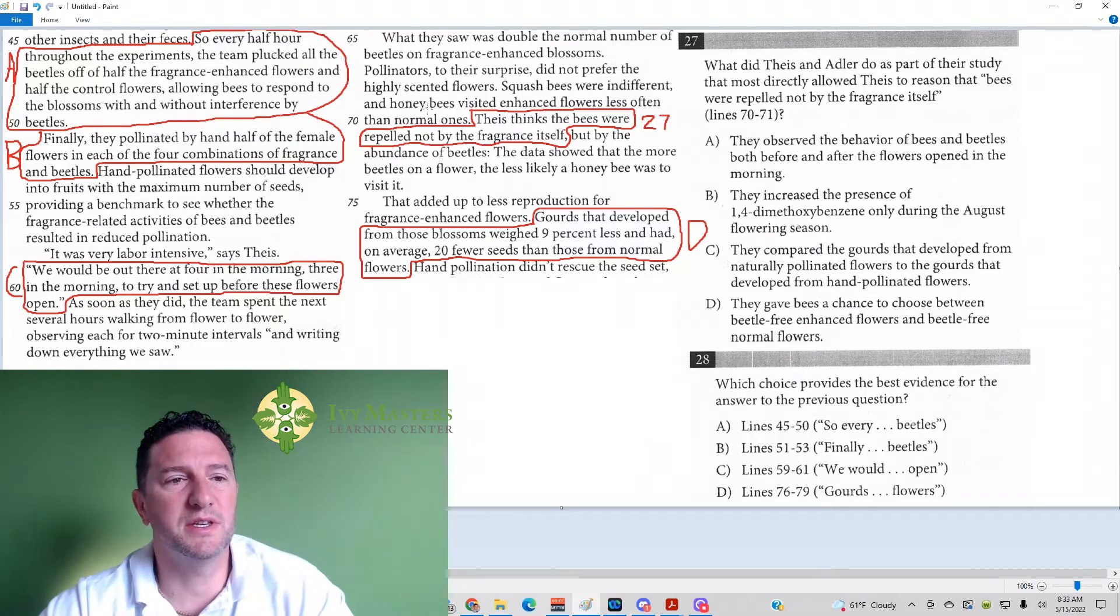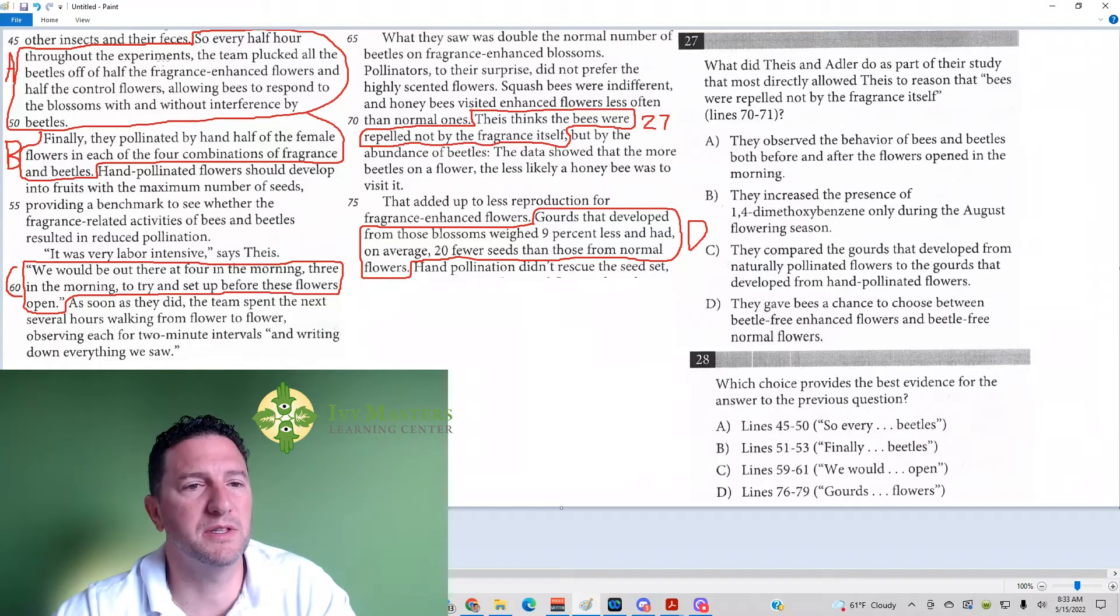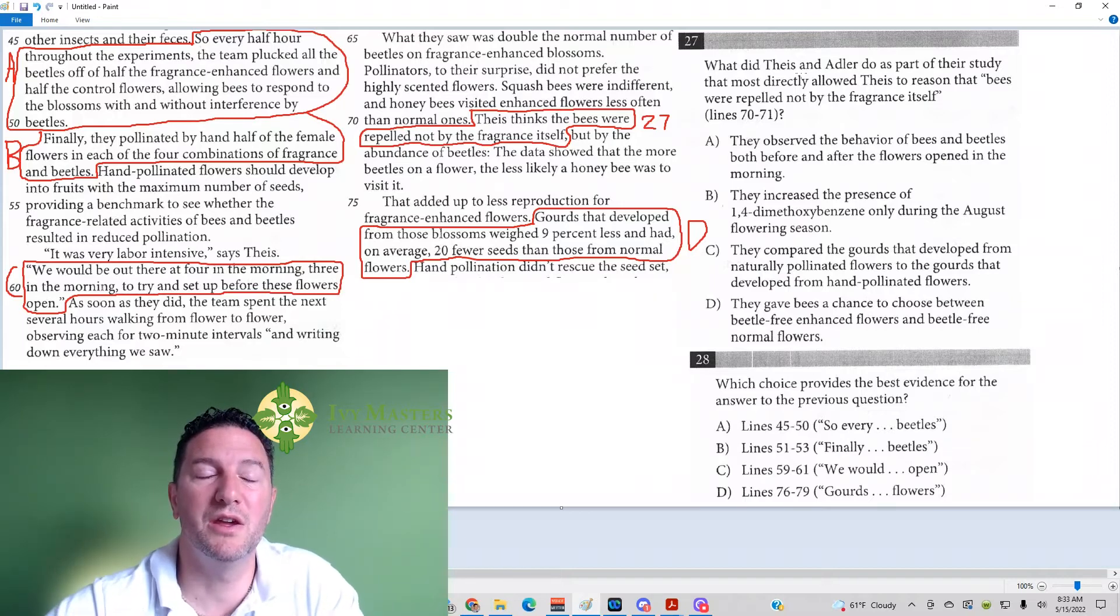So we go to answer A: Every half hour throughout the experiments, a team plucked off the beetles off of half of fragrance-enhanced flowers, and half of the control flowers, allowing bees to respond to the blossoms with and without interference by the beetles. It looks like that is definitely something that they did that would help them determine whether the bees were repelled by the fragrance or by beetles.